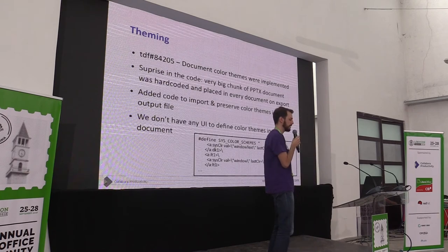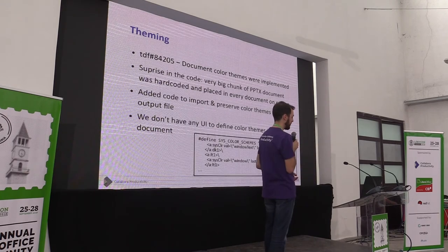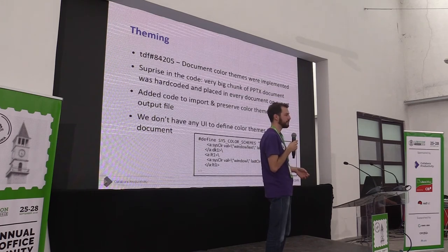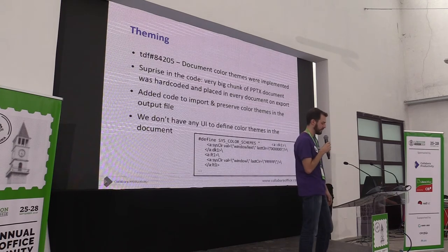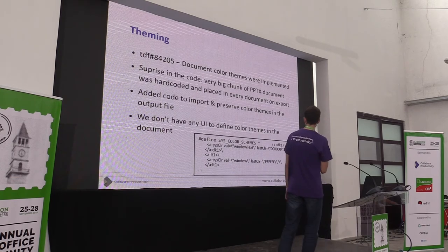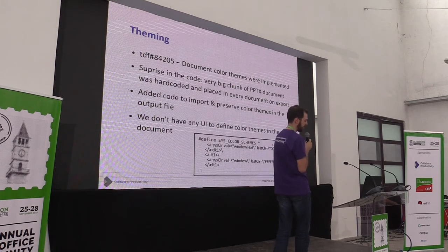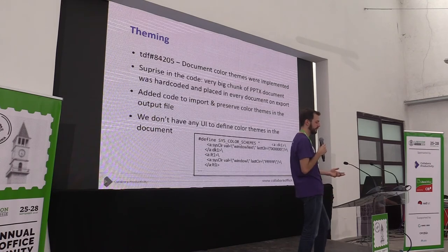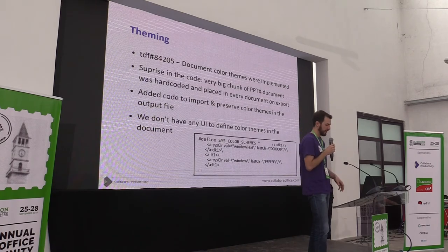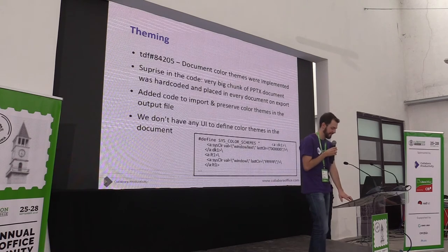One of the new features is support for document color filling. I was surprised to find we had a very large block of hardcoded XML copied into each document. I had to do some rework and add import and export parts for document colors. Now the document is correct, but we don't yet have the possibility to add colors via UI, so we need a small UI for this — I think creating a new feature request or research project would be a good idea.